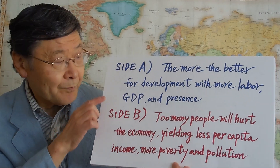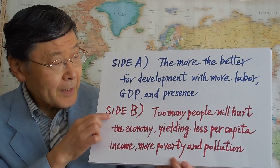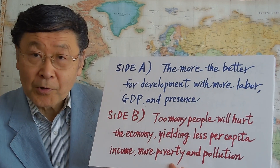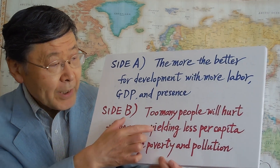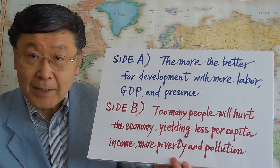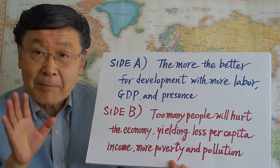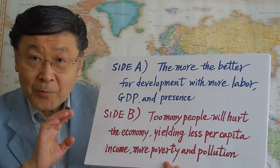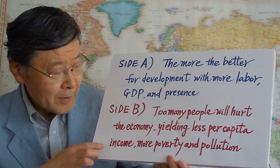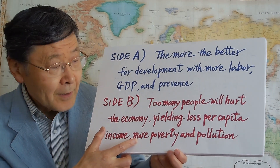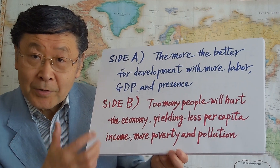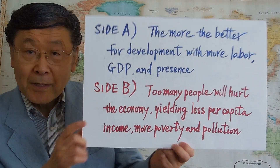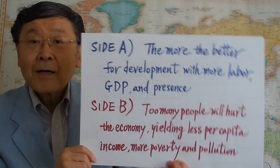In contrast, Side B says too many people will hurt the economy. Too much population is no good because it yields less per capita income — income divided by population — so too many people reduce that number, with more poverty and more pollution, hurting the economy locally as well as globally. Which position to take is up to you.